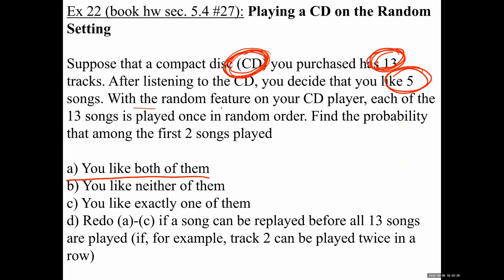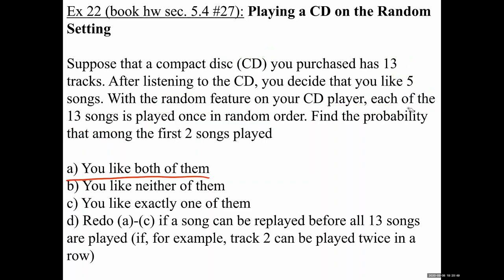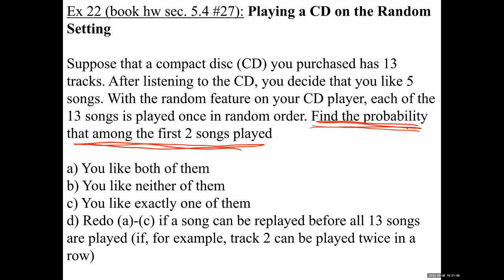With the random feature on your CD player, each of the 13 songs is played once in random order — meaning the CD player picks an order and plays all 13 songs. The question doesn't care about all 13 songs though. We only care about the first two songs. Find the probability that among the first two songs, Part A says you like both of them.